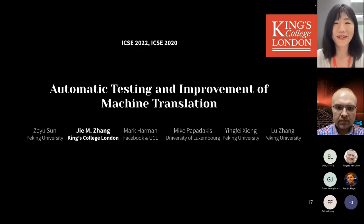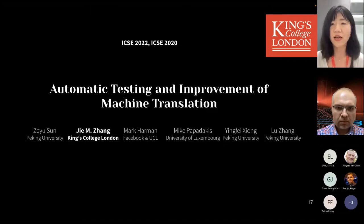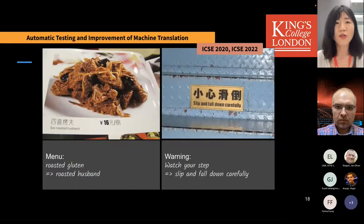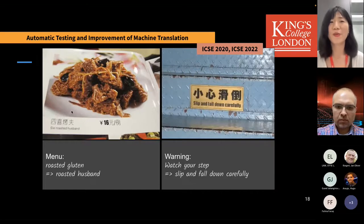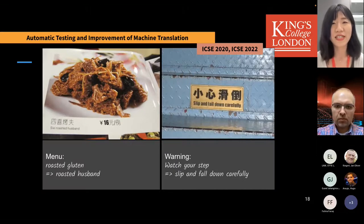The first publication I'll discuss is automatic testing and improvement of machine translation, a work with Zoy from Peking University, Fei, Lu Jian, Mark from Facebook, and Mike Papadakis from the University of Luxembourg. Machine translation is increasingly used in daily life since we all speak different languages, but machine translations can have many bugs. Users often lack the ability to judge whether a translation is correct and blindly trust it.